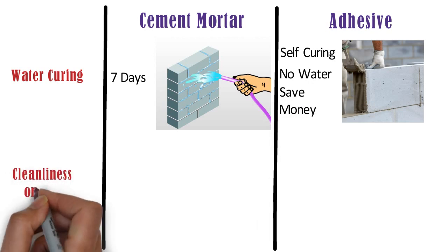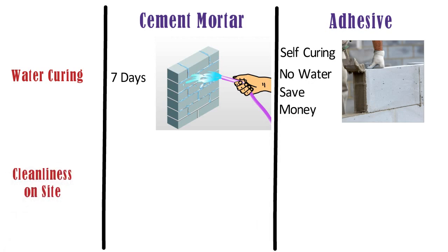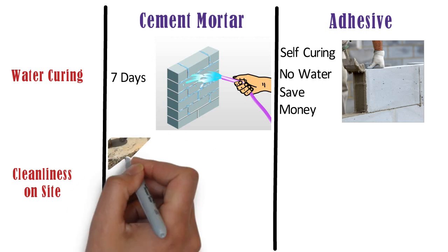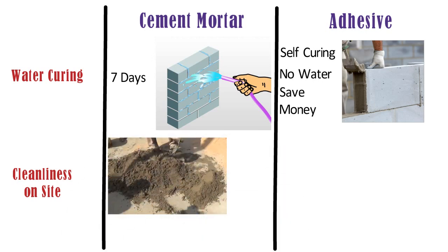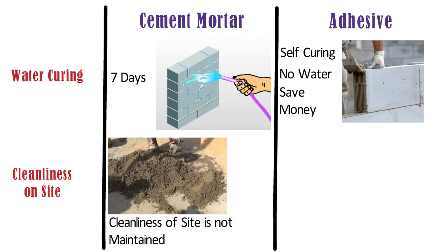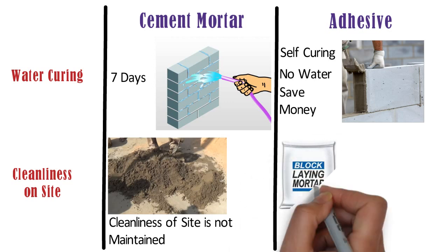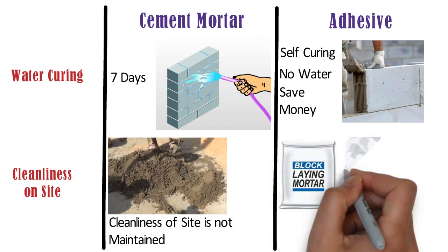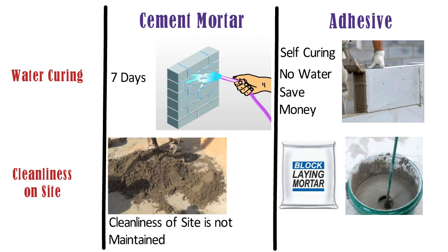Cleanliness on site. In case of conventional mortar, due to mixing of raw materials such as cement, sand, and water on site and curing, the cleanliness of the site is not maintained. Whereas, AAC block adhesive comes in premix form — only water has to be added at site. Due to this and its self-curing nature, the cleanliness of site is maintained.